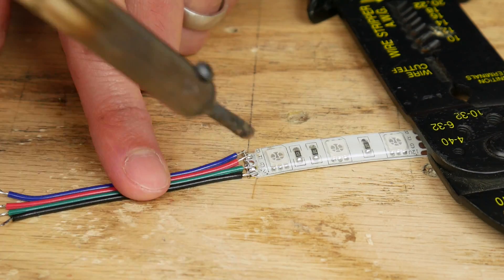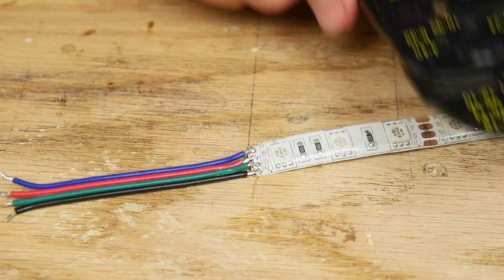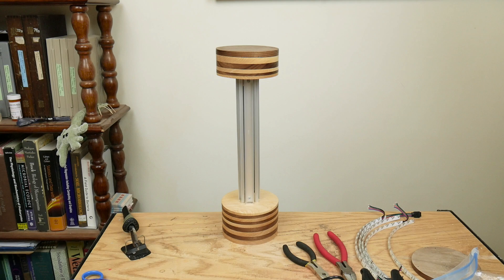Then I soldered the other 3 wire segments onto 3 other LED strips. The LED strips need to be wired together in series and I planned out how I was going to wire them up before soldering anything.